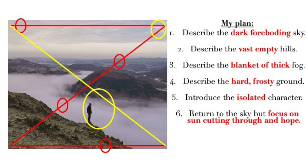After doing that, your plan would look something like this. The bits in red are quite key because they help create a tone — that's an important thing within a description. I'll be adding initial thoughts and trying to create some images before I actually start writing. You can see I've started with number one: describe the dark, foreboding sky, setting a dark tone. At point six I'm returning to the sky, but now the focus is on the sun cutting through and it's about hope. I'm also building in vocabulary I might want to use — things like 'isolated' and images like 'a blanket of thick fog' — building atmosphere and structure within my plan.